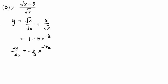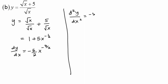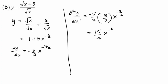So that is the answer for our first order differentiation. Now let's find the second order. d²y/dx² is equal to negative 5 over 2, multiplied by the power negative 3 over 2, giving x to the power of negative 5 over 2, since we subtract 1 from negative 3 over 2. So finally the answer will be 15 over 4 times x to the power of negative 5 over 2.